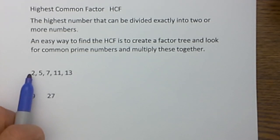The first five prime numbers are 2, 5, 7, 11, and 13.